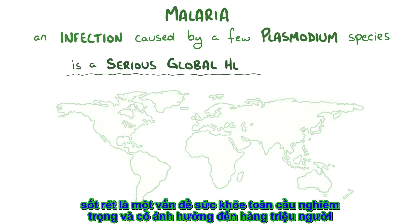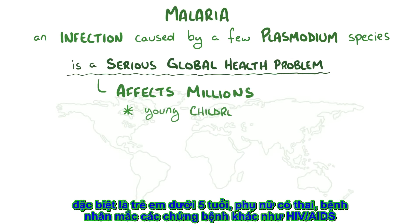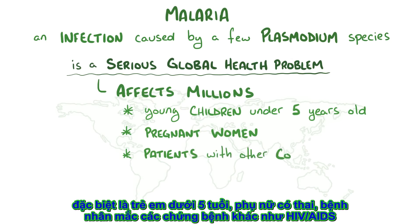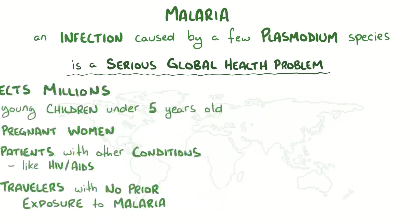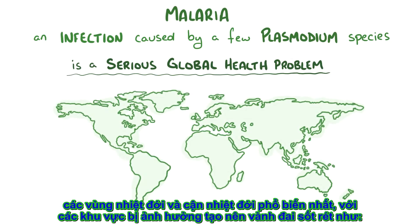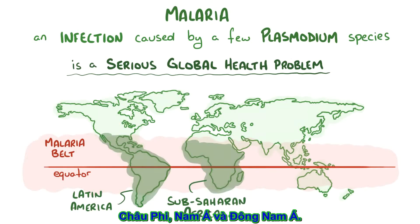Malaria is a serious global health problem that affects millions of people, particularly young children under the age of 5, pregnant women, patients with other health conditions like HIV and AIDS, and travelers who've had no prior exposure to malaria. Tropical and subtropical regions are hit the hardest. Together, the most affected regions form the malaria belt, which is a broad band around the equator that includes much of Latin America, Sub-Saharan Africa, South Asia, and Southeast Asia.